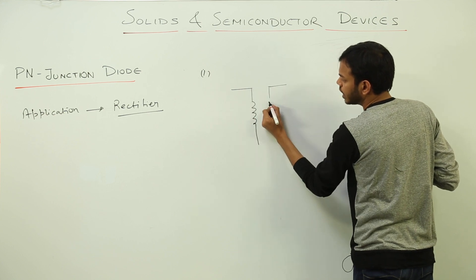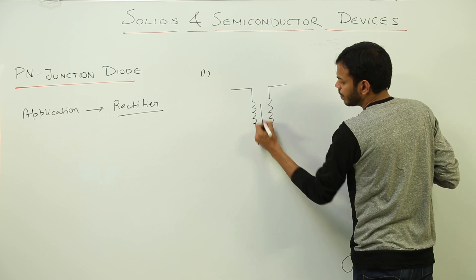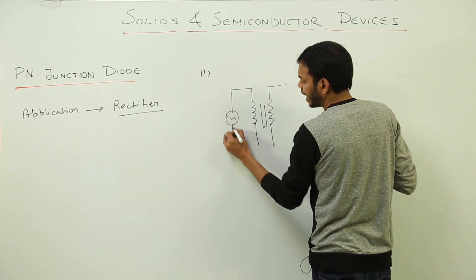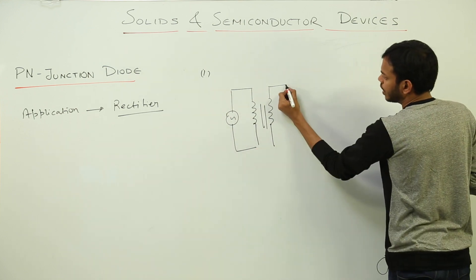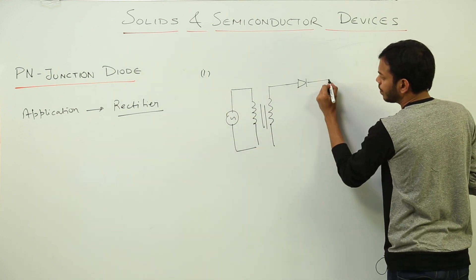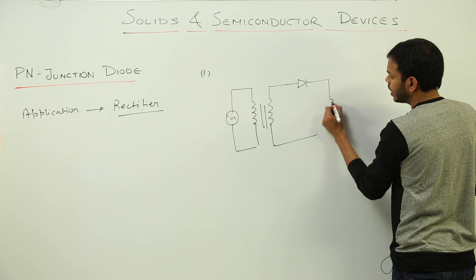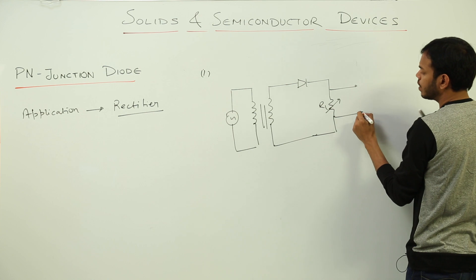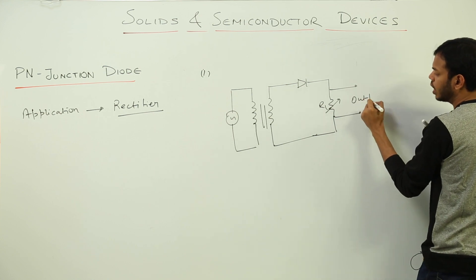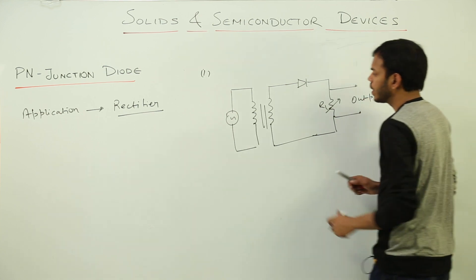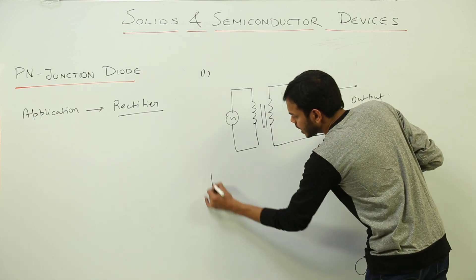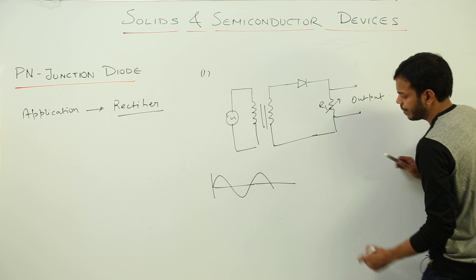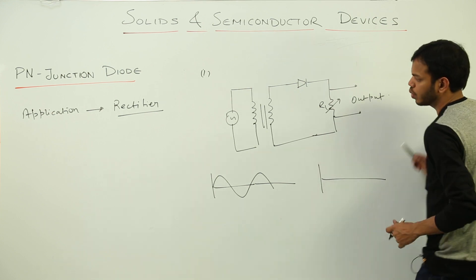See this is a symbol of what? Transformer. This is the AC source which is to be rectified. Here we have a diode and it is connected with load resistance RL, and across load resistance we have taken out output. Now how it is working? Consider input signal or input AC source like this and we have to talk about output source.